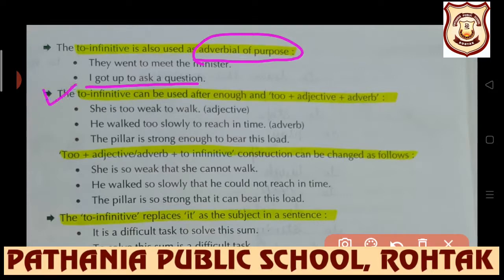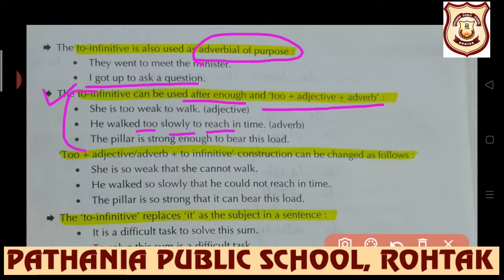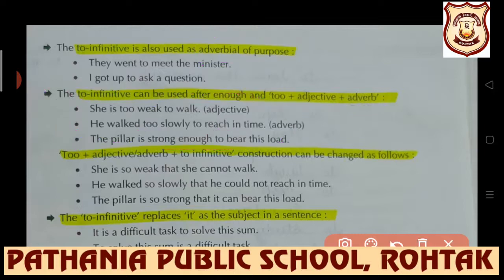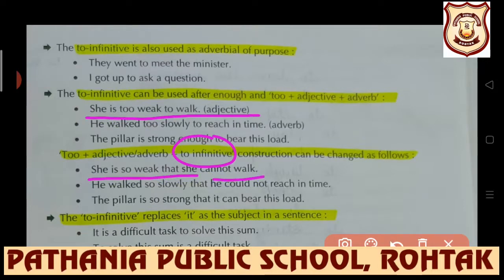'Two + adjective/adverb + to-infinitive' construction can be changed as follows: 'She is too weak to walk' can be rewritten as 'She is so weak that she cannot walk.' 'He walked too slowly to reach in time' becomes 'He walked so slowly that he could not reach in time.' So this construction can also be written in this alternative form.